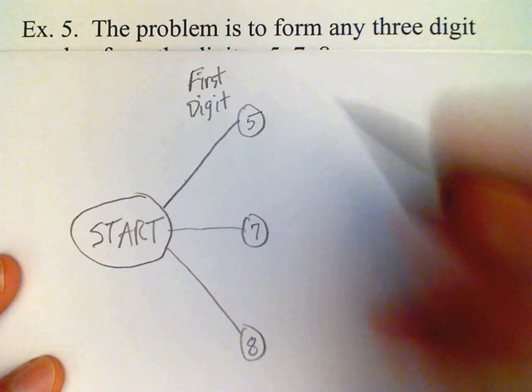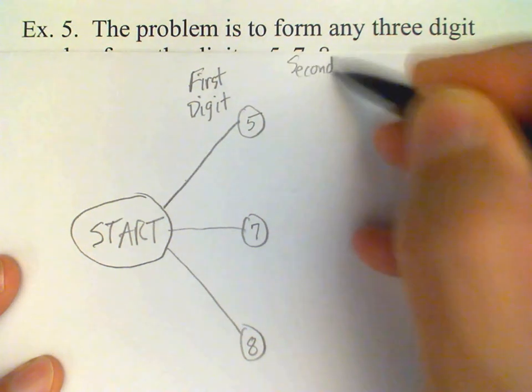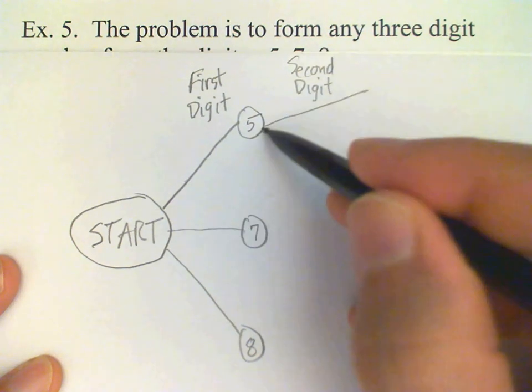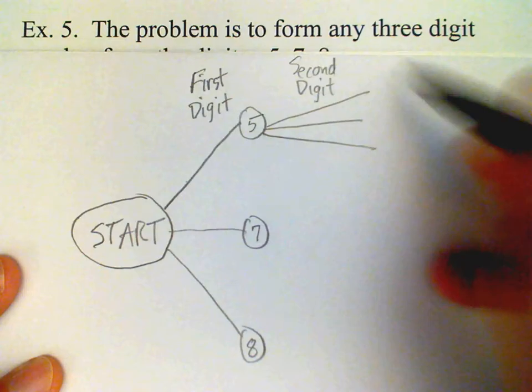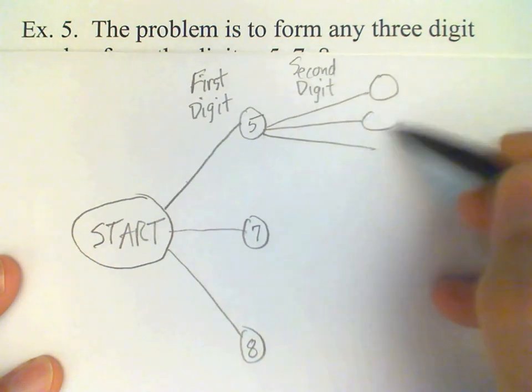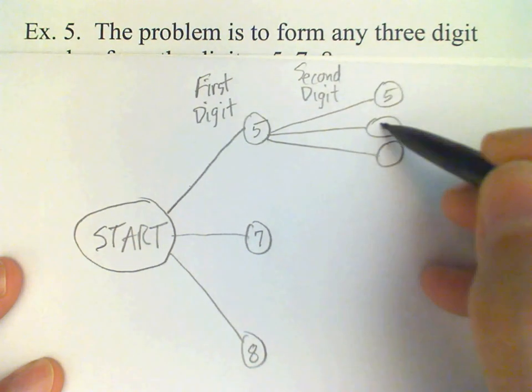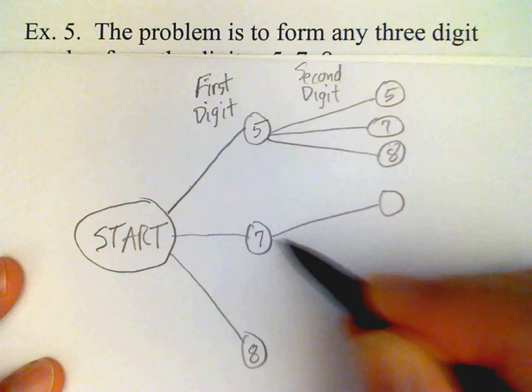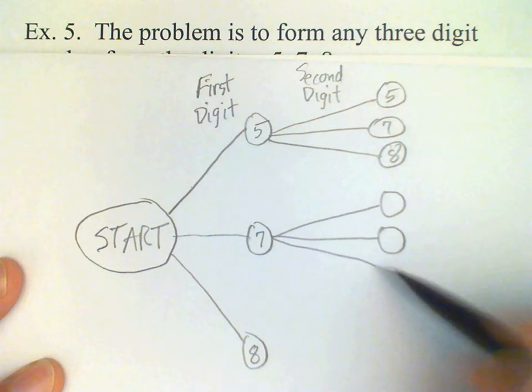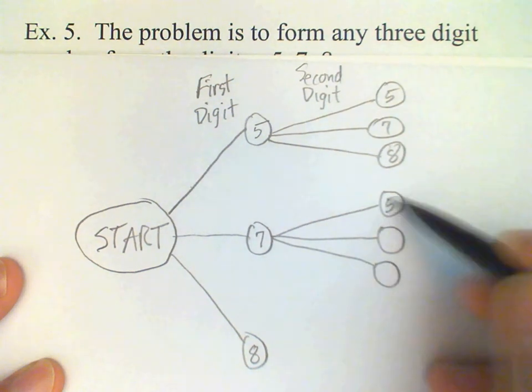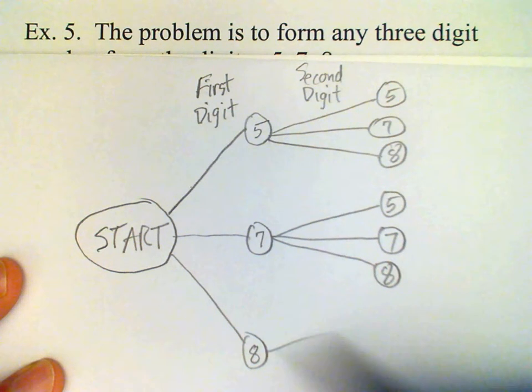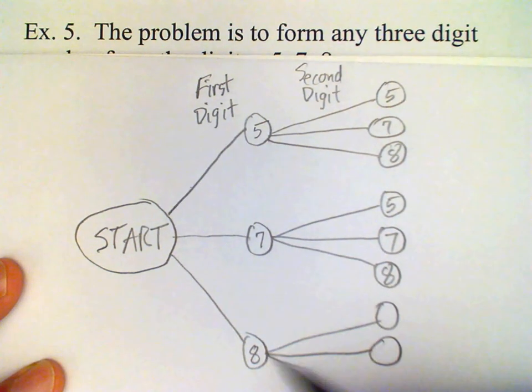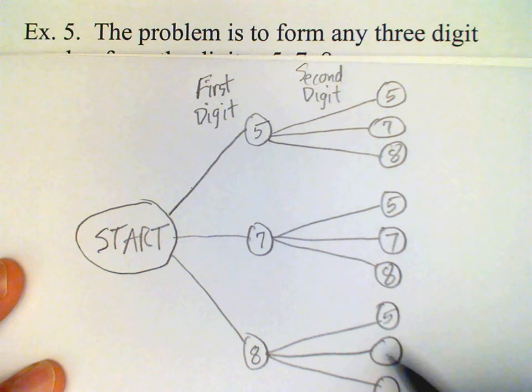Okay, and then for the second digit, again, three possibilities. Five, seven, eight. Five, seven, eight.